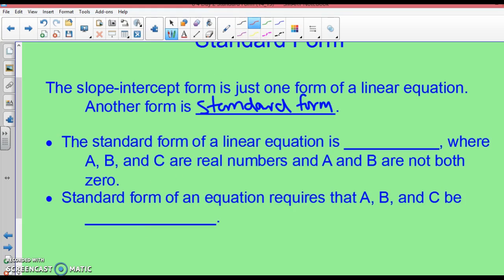We just added this to your yellow sheet. Standard form of a linear equation is Ax plus By equals C, where A, B, and C are real numbers - that should not be real numbers, that should be integers - and A and B are both not zero.